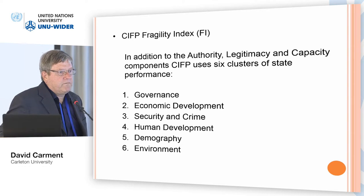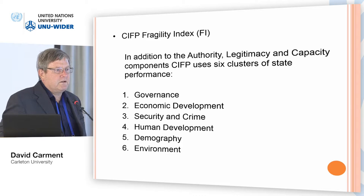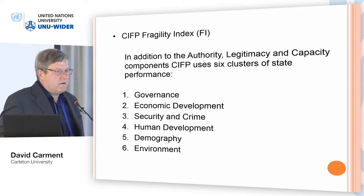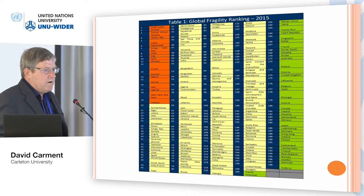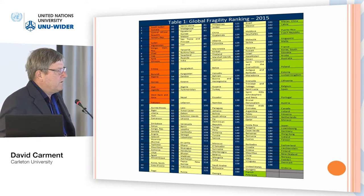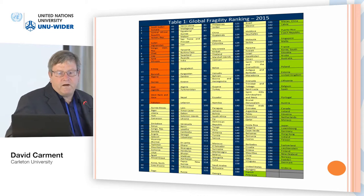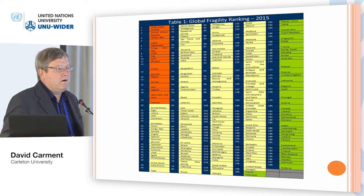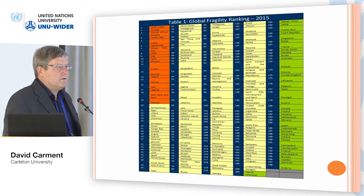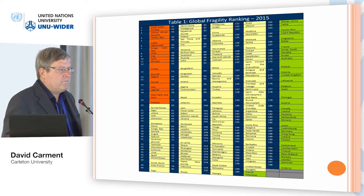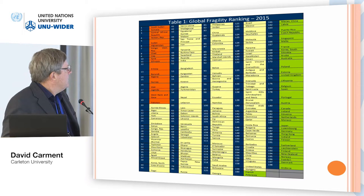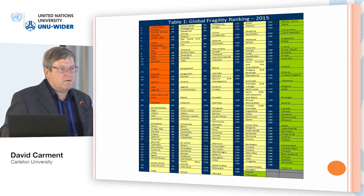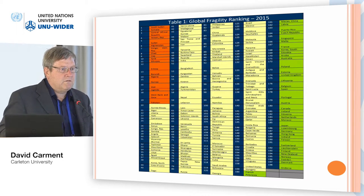These clusters include the authority, legitimacy, and capacity measures, which tap into different dimensions of fragility, as well as six clusters of state performance: governance, economic development, security and crime, human development, demography, and environment. The most fragile countries — shown in orange — are high-risk, scoring on average 6.5 and above on our nine-point scale. In 2015 the bulk come from sub-Saharan Africa, with South Sudan topping the list, followed by Somalia, Central African Republic, Yemen, and Sudan. The full detailed report is available on our CIFP website.